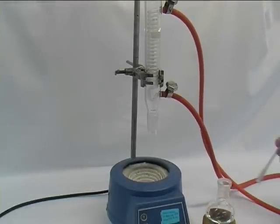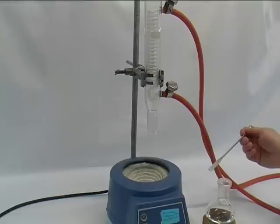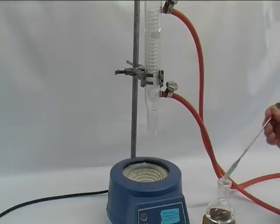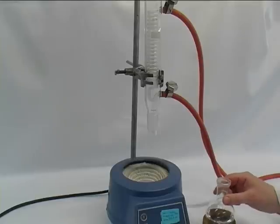The next part of the setup is to put in some anti-bumping granules into the liquid in the round bottom flask. This helps to even out the refluxing a little bit.